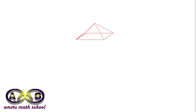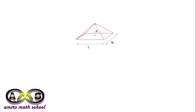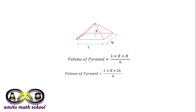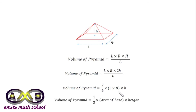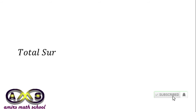Each piece is one pyramid, which is one-sixth of the cube. For this pyramid, the length is l, breadth is b, and the height h is half the height of the cube. So the volume of the pyramid equals l × b × h divided by 6, which equals the volume of the cube divided by 6. Replacing the cube height with 2h and simplifying, we get (2/6) × l × b × h. Since l × b is the area of the base, the volume of the pyramid is one-third the area of the base times height.